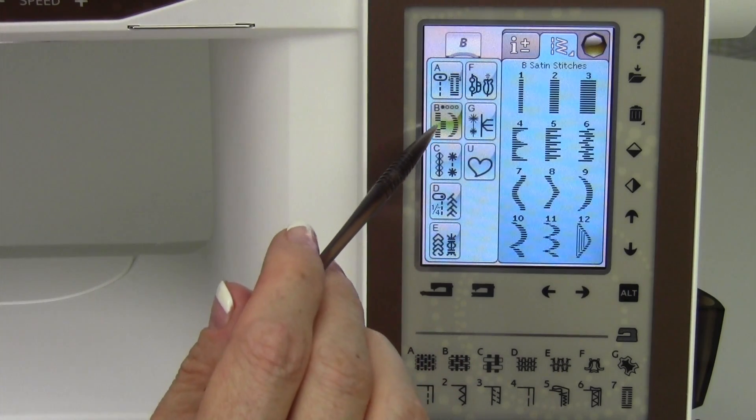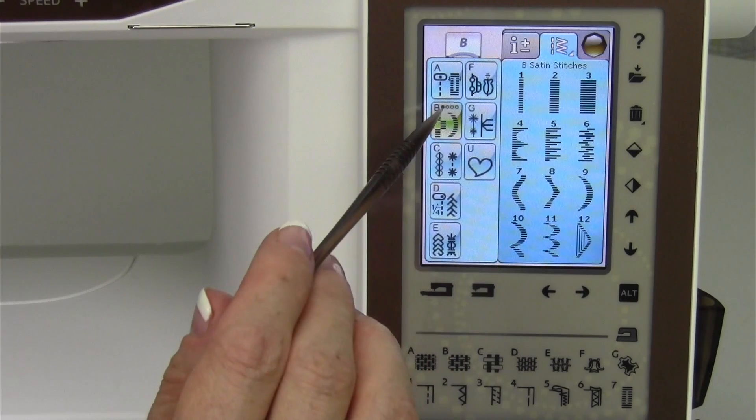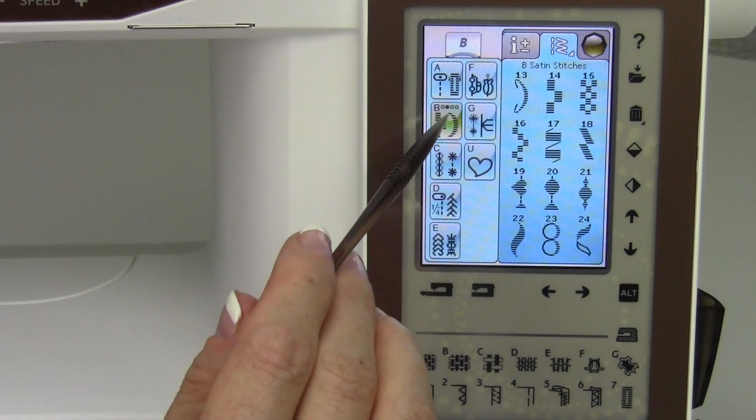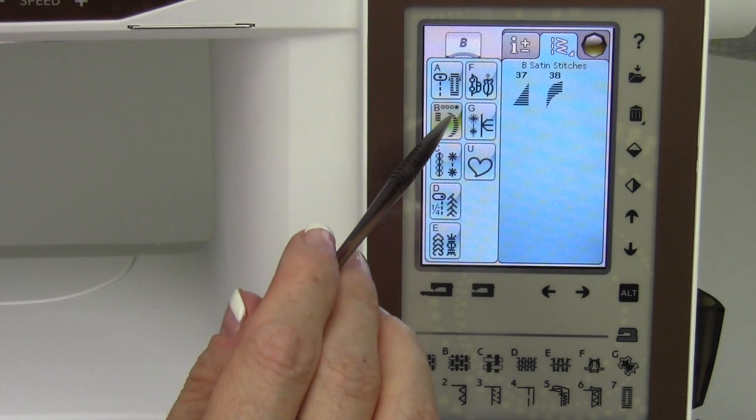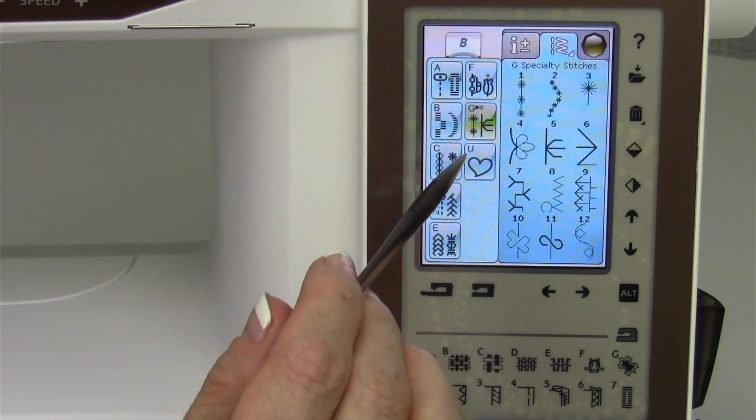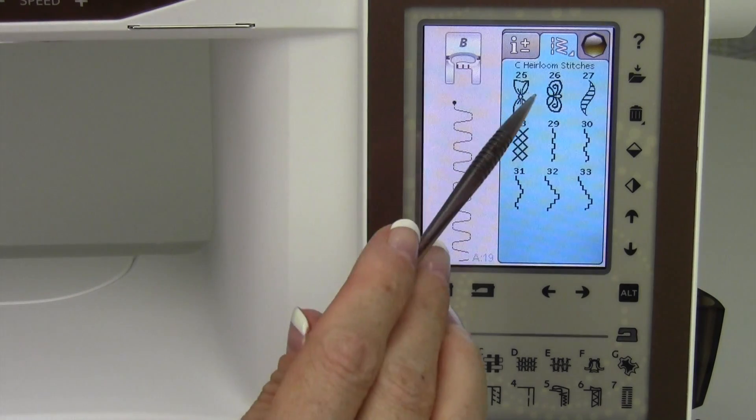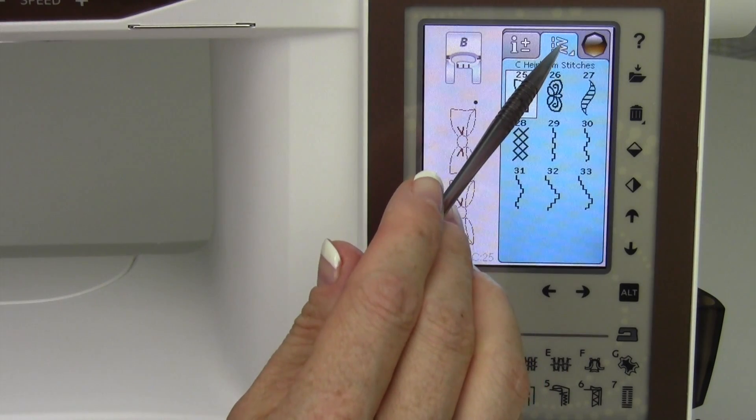If we jump down here to the B menu, which are for satin stitches, notice there's four bubbles here: one, two, menu three, menu four, so thirty-eight stitches. All of them usually have some type of multiple pages in each of those areas, and when you pick one, it's ready to stitch.